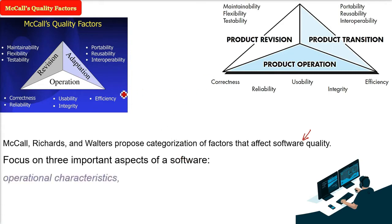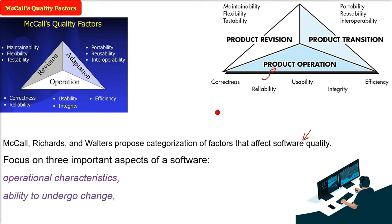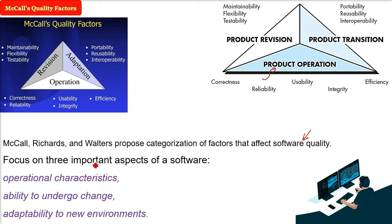The first one is the operational characteristic, that is the product operation — when a software will be used, what are the characteristics, features, and functions. The ability to undergo change is product revision — if you change the software. Finally, the adaptability to new environments is product transition.